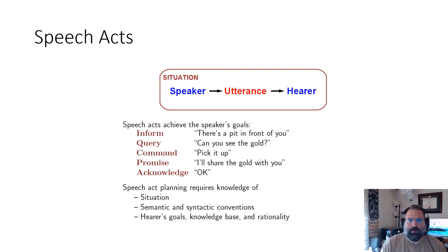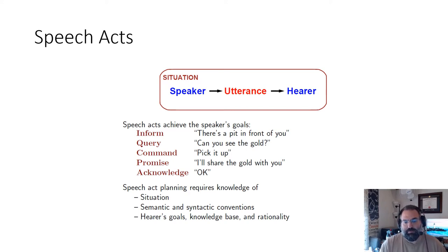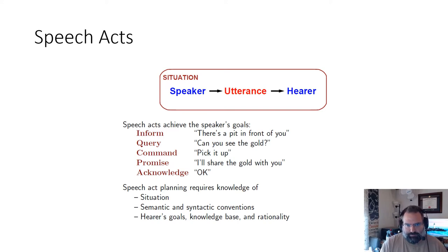There's also a command — when you say something with the intent of some action occurring: 'pick it up,' 'stop what you're doing,' 'turn on the car.' A command expects the result to be action after it's understood. A promise is something like 'I'll share the gold with you' or 'if you do this, I'll do that' — a conditional promise, basically an affirmation that something is going to occur. An acknowledgement is essentially just as the name implies: receipt of a message or confirmation of understanding.